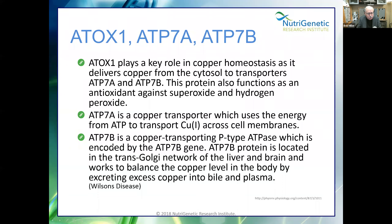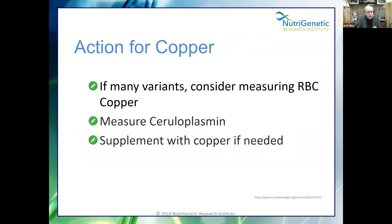ATOX1 plays a key role in copper homeostasis, delivering copper from the cytosol to transporters. ATP7A is a copper transporter; ATP7B is another copper transporter involved in Wilson's disease. For serious genetic mutations, we do the testing: look at serum copper, red blood cell copper, and ceruloplasmin. Genetics is not a diagnosis — think of it as waving at you to consider looking in a certain direction in your assessments. If many variants are present, consider measuring RBC copper and ceruloplasmin, and supplement gently with copper if needed.